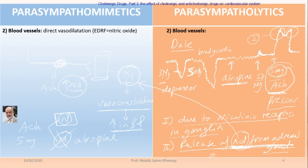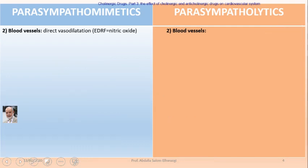This is the famous Dale phenomena, also known as Dale reversal. Therefore, acetylcholine is normally a depressor — it decreases blood pressure. But if given after atropine in a sufficient dose, it can increase blood pressure in a biphasic manner: phase one due to stimulation of nicotinic receptors in the ganglia, and phase two due to release of adrenaline from the adrenal gland.